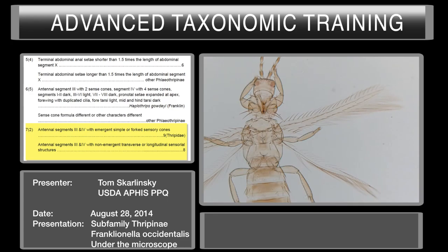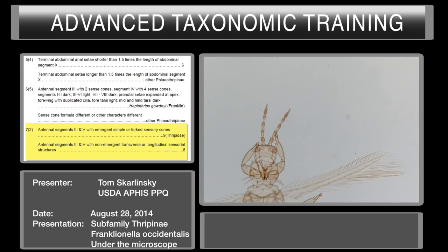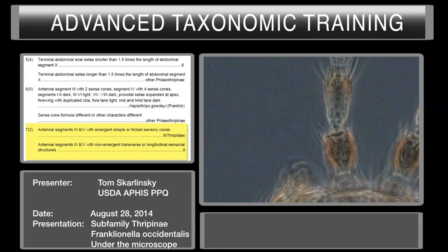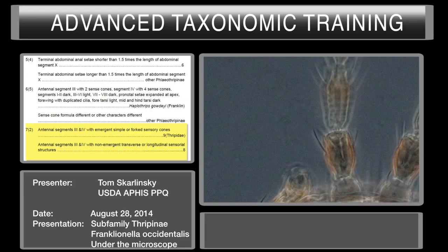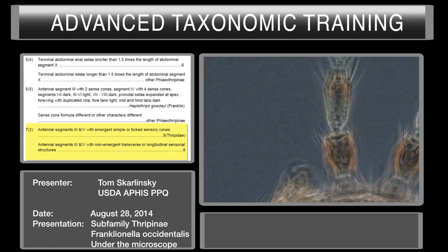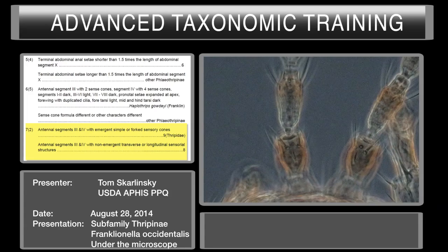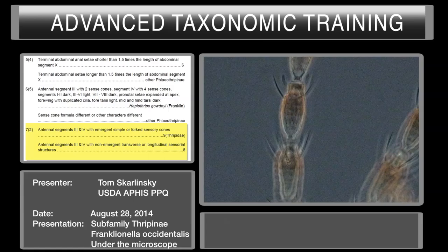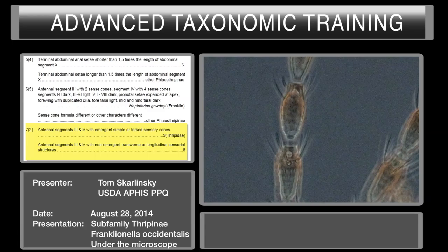Let's go down to couplet number seven in our key. In our antennal segments three and four, are our sensory structures actually on the antennal segments, or are they coming out of the antennal segments? We're on phase contrast. Let's go ahead and count our antennal segments. What we're interested in is three and four. So let's go ahead and look at three and see if we can see that U-shaped or horseshoe-shaped fourth sensory cone.